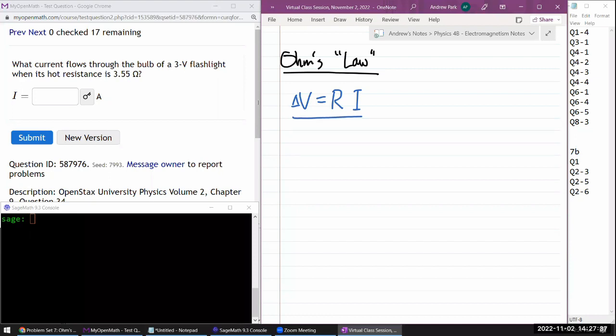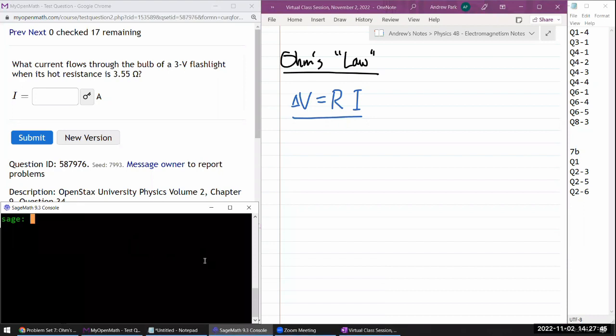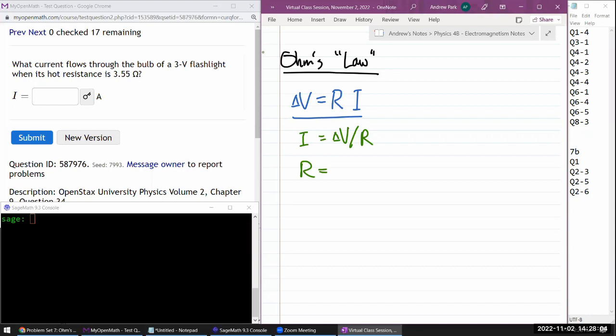Well, here it looks like we are given the voltage difference and the resistance and being asked for a current. Wait a minute, let me just write down all three versions of Ohm's law. So this is the version that solves for V. I'm doing algebra in my head to solve it for I. That's going to be voltage change over R. And if we get a question asking for resistance, it'll be ΔV over I.